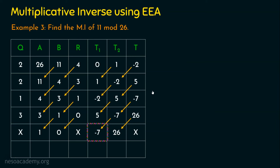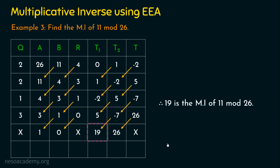When we encounter divide by zero, whatever is in T1 is the multiplicative inverse. So the multiplicative inverse of 11 mod 26 is minus 7. But we always want a positive result. Minus 7 mod 26 means we add minus 7 and 26 to get a positive number: minus 7 plus 26 equals 19. So 19 is the multiplicative inverse of 11 mod 26.